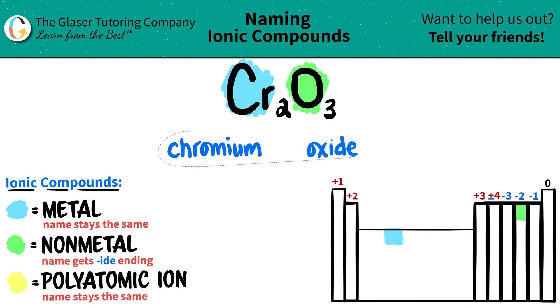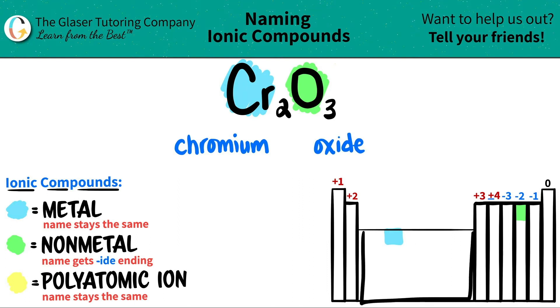Now, since this is an ionic compound, we have to make sure if we need a Roman numeral or not. And since chromium, which is over here, is part of my transition metal block, I do need a Roman numeral. That's when you need the Roman numerals. And the Roman numeral is always the charge of the metal.